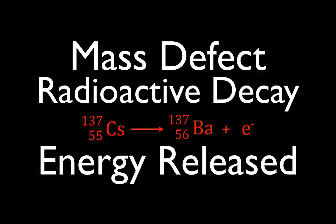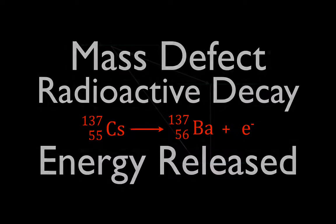Okay, in today's video, as you can see, we're going to be going over a mass defect in radioactive decay, and we're going to calculate the amount of energy released during the beta decay of cesium-137. So, let's get started.